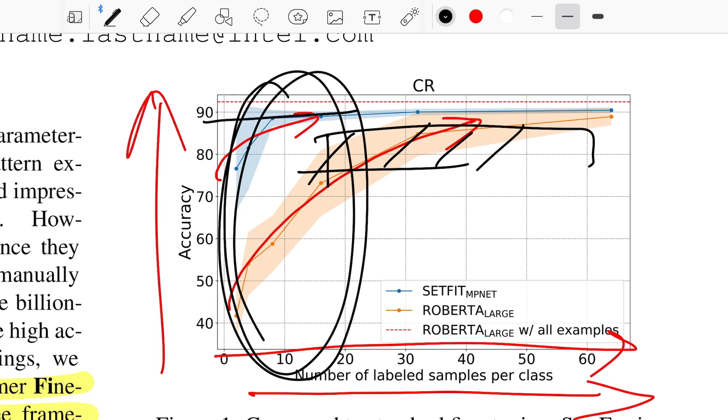That way we can clearly see the impact that this method has. When compared to RoBERTa Large with all the examples, we're getting close to 90-95% accuracy, which is kind of expected because that's a full-fledged model trained in a supervised setting, so it's likely to get higher accuracy numbers.